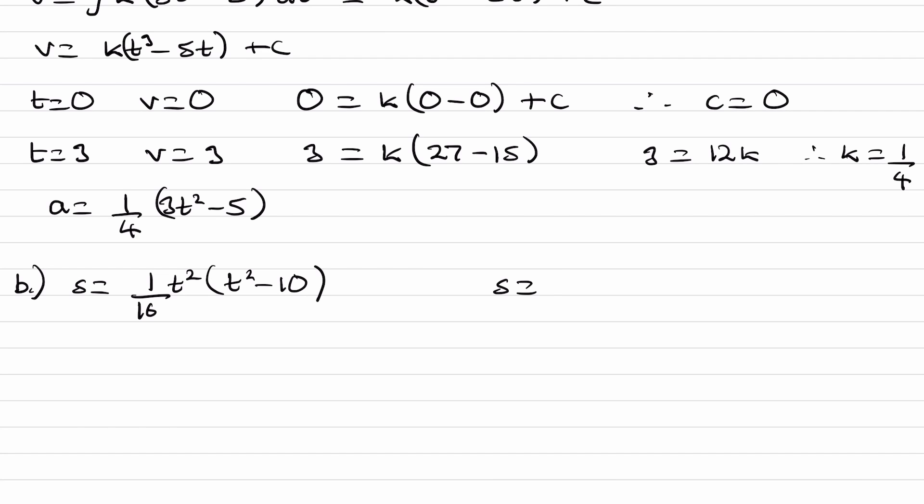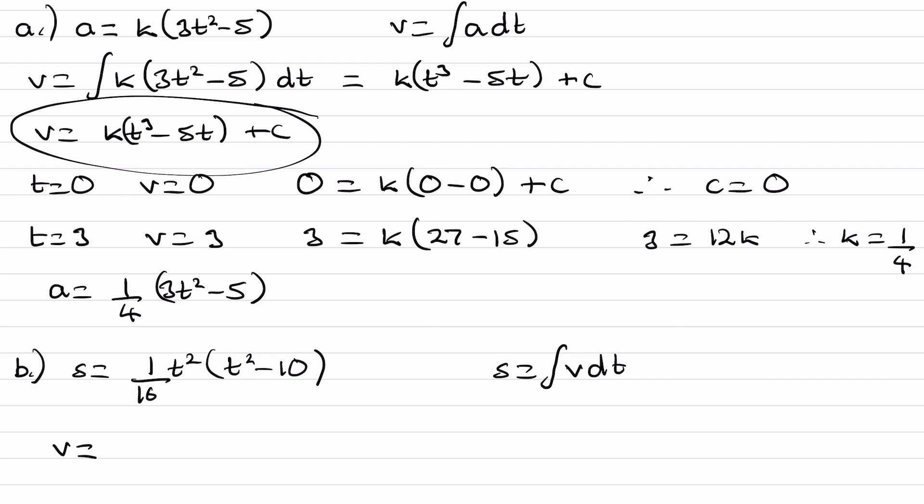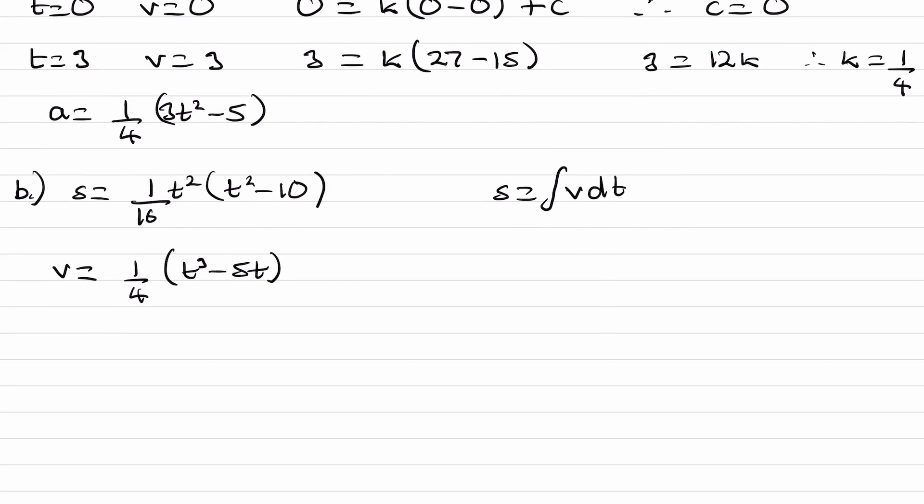So we can work this out by integrating the velocity equation. Integrating velocity gives you displacement. Our velocity equation was, I don't think we wrote it out. We have this, v is equal to what we have here. And then we worked out that c was 0, and we worked out that k was 1 quarter. So we can put all of those things in. So v is then equal to 1 quarter multiplied by t cubed minus 5t. c is 0, so plus c is 0.